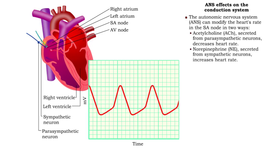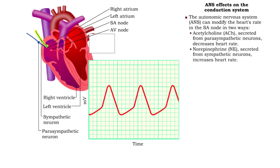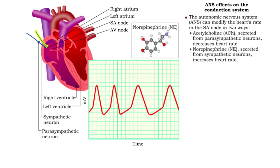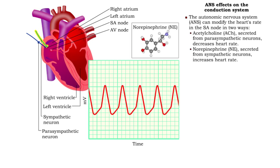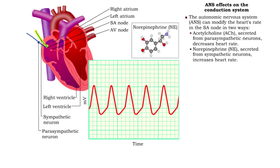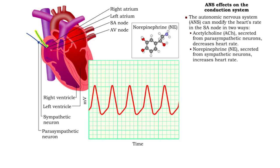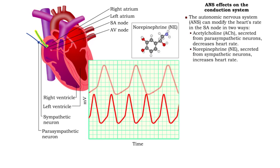Conversely, norepinephrine increases heart rate. This hormone, secreted from sympathetic neurons, is produced more during exercise and stress.